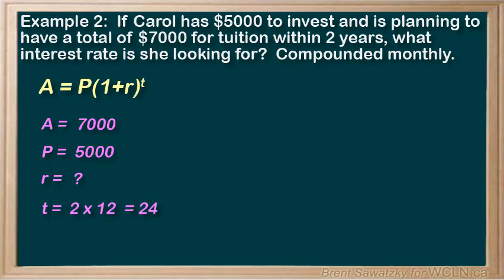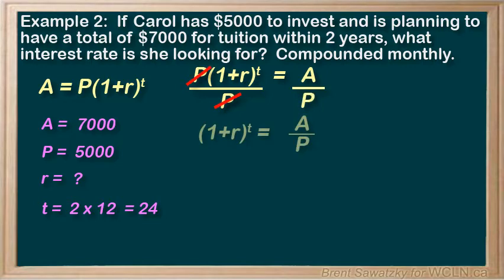Let's rearrange our formula to solve for R, before we plug in our numbers. So let's put the R on the left, switching sides. And to get the R by itself, let's start by dividing by P. And cancelling, we're left with (1 plus r) to the power of t equals A over P.